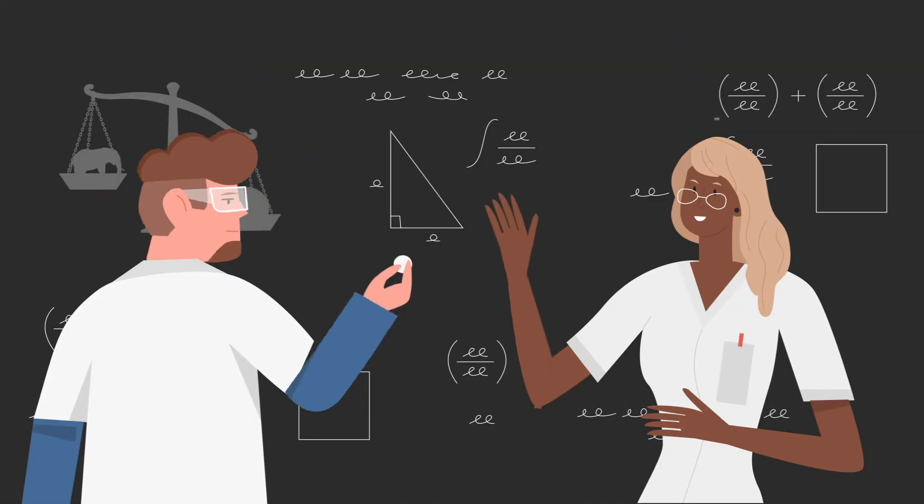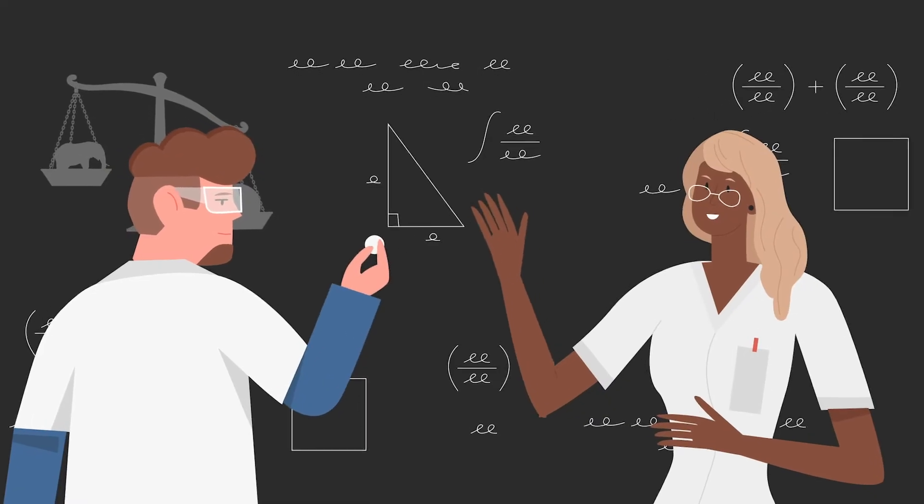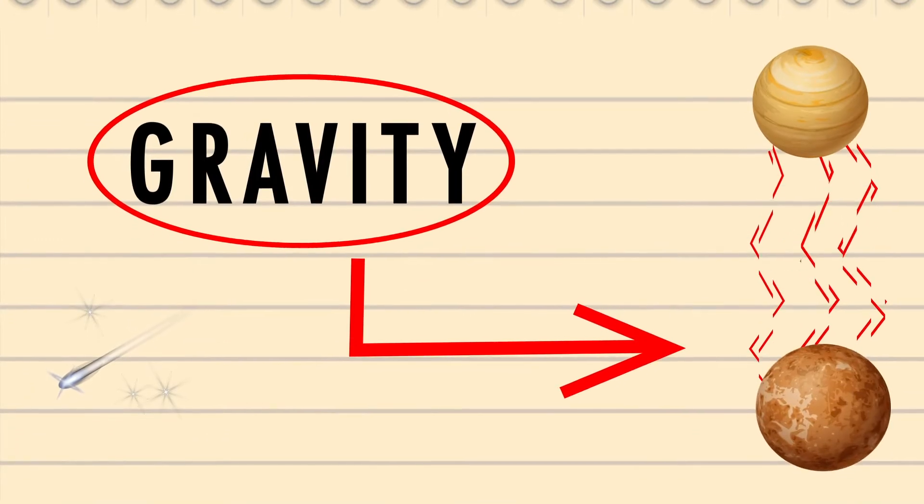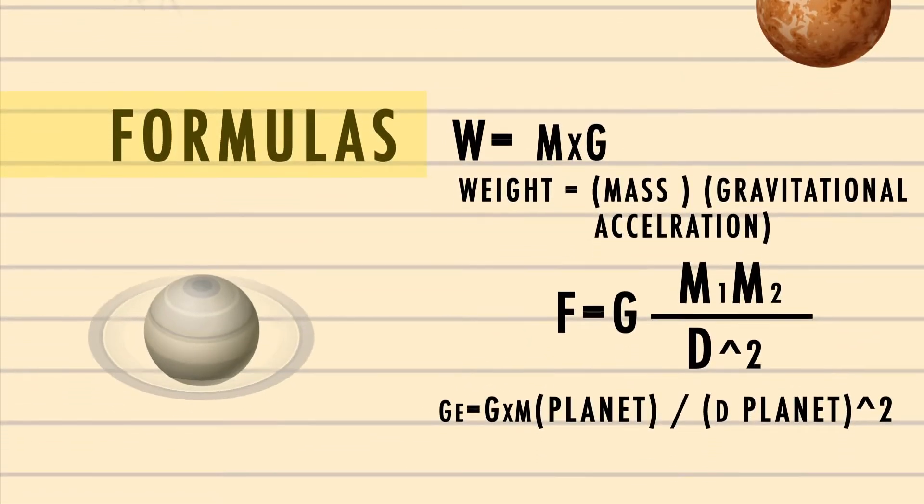So how do scientists determine the weight of our world since they can't put earth on a scale? Experts study the gravitational pull a planet has on other things and use math to calculate its size.